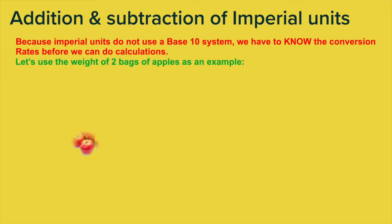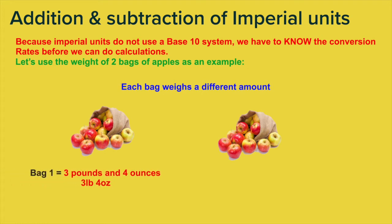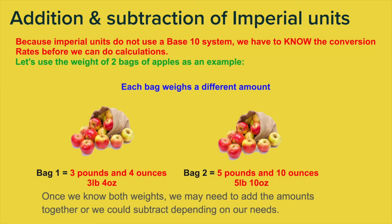Let's use the weight of two bags of apples as an example. Each of these bags weighs a different amount. This one weighs three pounds four ounces and this one weighs five pounds and ten ounces. Once we know both the weights, we may need to add or subtract the amounts together depending on our needs — for example, to find out how much they weigh together at the supermarket.